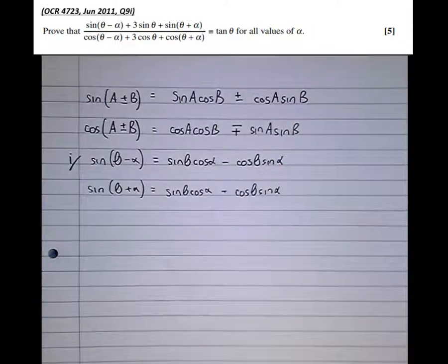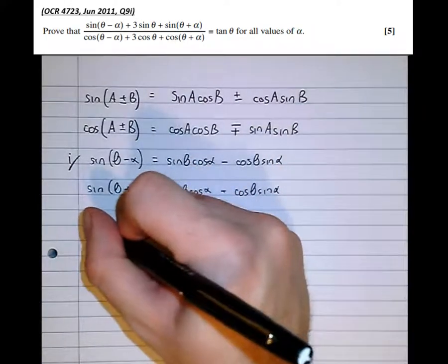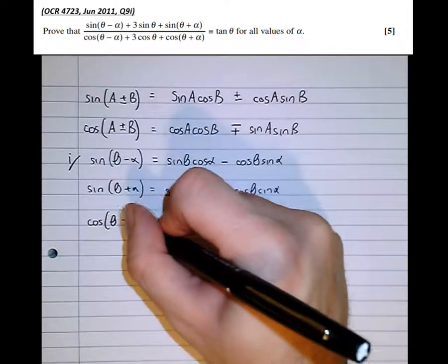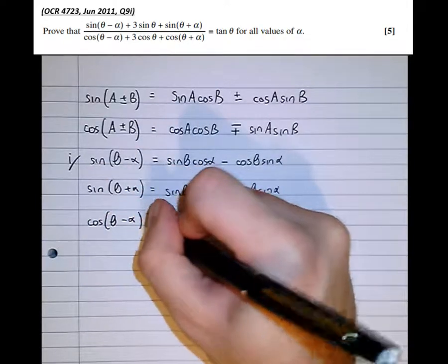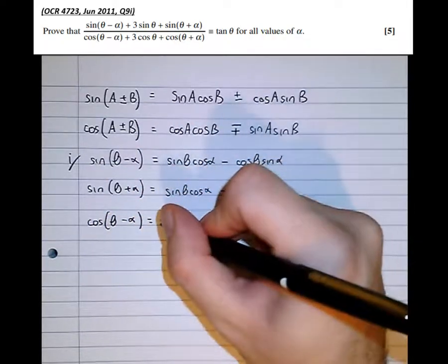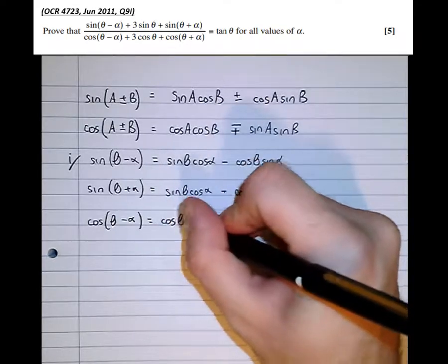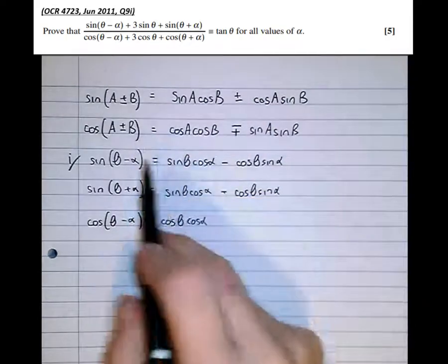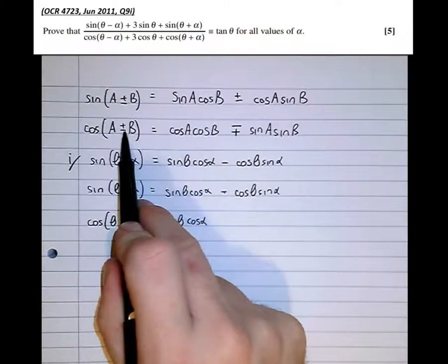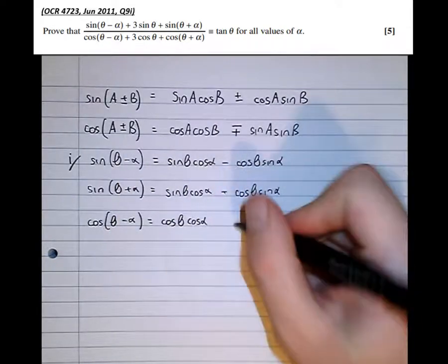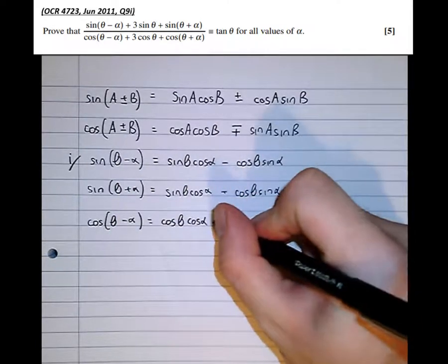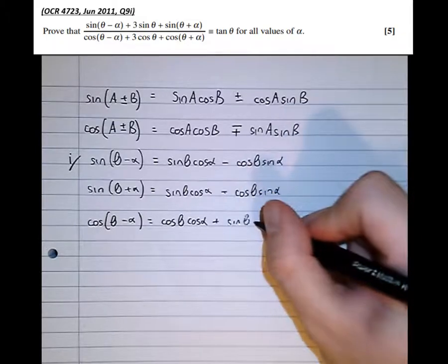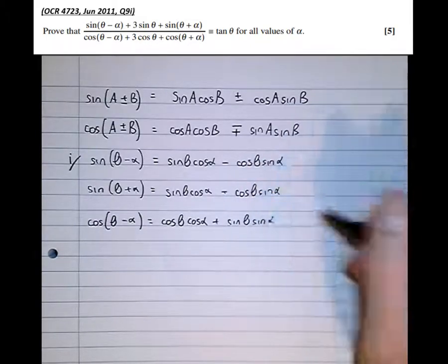Looking at the denominator, expanding cos of theta minus alpha, we end up with cos theta cos alpha. Now we used a minus here, so we use a plus here: plus sine theta sine alpha.